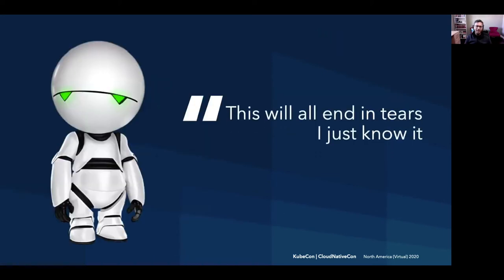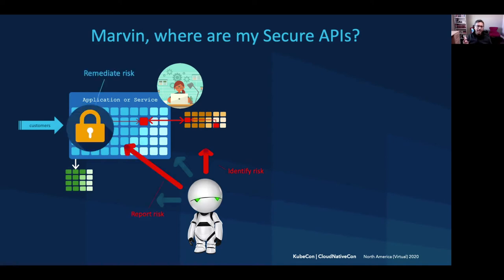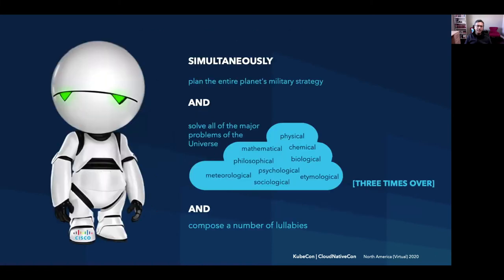Seeing all of this, Marvin — the paranoid android with the weight of the world on his shoulders — steps in with this depressing quote. Wouldn't it be nice if there really was a Marvin with a planet-sized brain who could be observing the entire application lifecycle from repo to runtime, identify the risks of using an API to all the teams concerned, report that risk to security SRE, SecOps, and CISOs, and maybe even remediate that risk to customer data before it happens? Now that is indeed a Marvin-sized problem. But do not underestimate Marvin — he could simultaneously plan an entire planet's military strategy, solve all major problems of the universe three times over in parallel, and also compose a number of lullabies. If he could do all of that, he could surely solve for the application and API security problem.